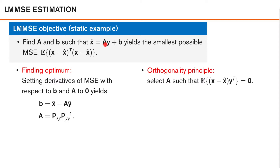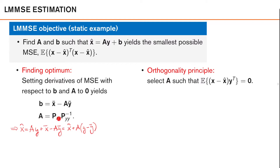There are several ways to derive the LMMSE estimator. For example, we can find the optimum by setting the derivatives of the MSE with respect to B and A to zero and then solve the linear equation system. It is convenient to solve for B first, which gives B equal to the mean of X minus A times the mean of Y. Substituting this back and collecting terms, we solve for A, which equals P_XY — the cross-covariance between X and Y — times P_YY inverse — the covariance of Y inverse. Plugging this in gives the final expression for our LMMSE estimator.